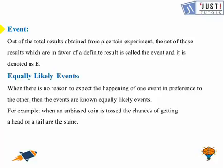After this, let's see what is event. So out of the total result obtained from a certain experiment, the set of those results which are in favor of a definite result or which we want, these are called events and it's denoted as E.